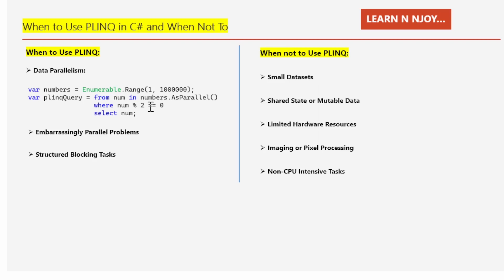The next scenario is embarrassingly parallel problems. This means tasks that can be easily divided into independent subtasks executed concurrently. PLINQ excels here — for example, crunching numbers on massive datasets where each element can be processed independently. PLINQ can slice through this task leveraging multiple CPU cores to speed up your application.